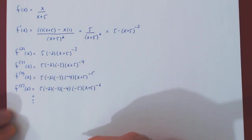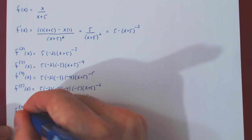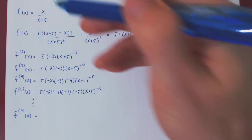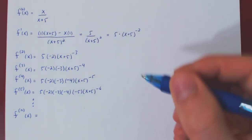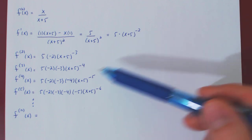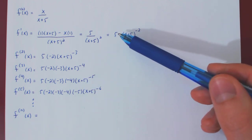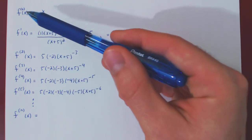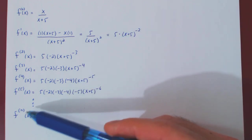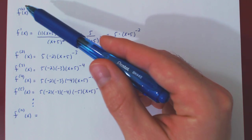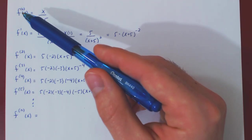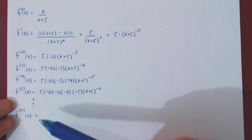Now we ask: can we find a pattern for the nth derivative of f? We start with the zeroth derivative — this is the function itself. You can see there is something different between the zeroth derivative and all other higher derivatives: the multiple of 5 is there from the first derivative onward, but not for the zeroth. This hints that we will find a pattern for the nth derivative beginning at n equals 1. We'll leave the zeroth derivative aside, as it simply provides the constant term of the Taylor series.